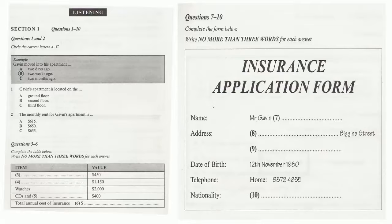Test 2. You will hear a number of different recordings and you will have to answer questions on what you hear. There will be time for you to read the instructions and questions and you will have a chance to check your work. All the recordings will be played once only. The test is in 4 sections. Write all your answers in the Listening question booklet. At the end of the test you will be given 10 minutes to transfer your answers to an answer sheet. Now turn to section 1.